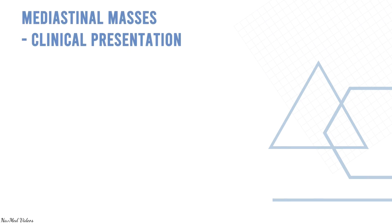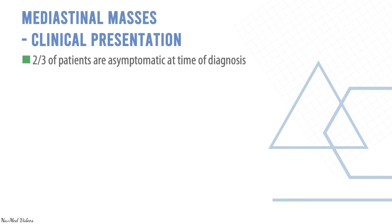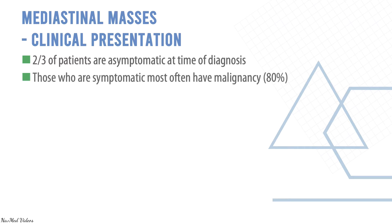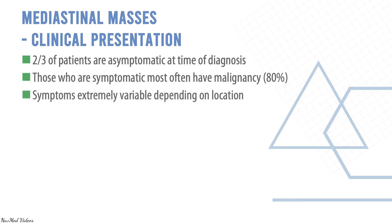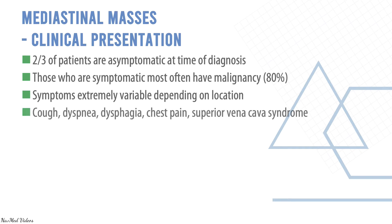Mediastinal masses: two-thirds of patients are asymptomatic at the time of diagnosis. Those who are symptomatic most often have malignancy. Symptoms are extremely variable depending on location and may include cough, dyspnea, dysphagia, chest pain, and superior vena cava syndrome.